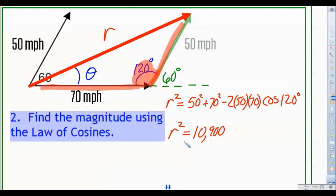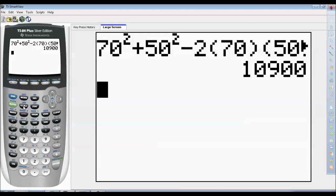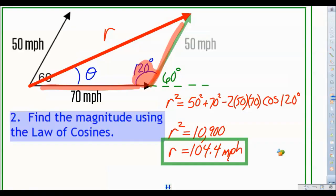So our calculator can spit this out here for us. And so now if we have r squared being equal to 10,900, let's go ahead and take the square root of that. Let's figure out what r was, the magnitude. So we have 104.4 miles per hour.